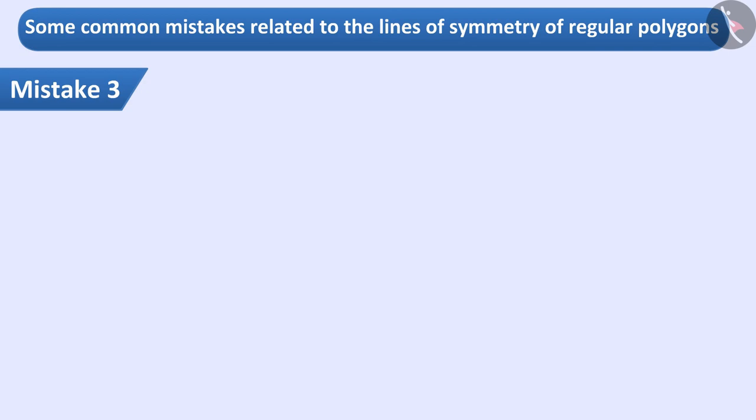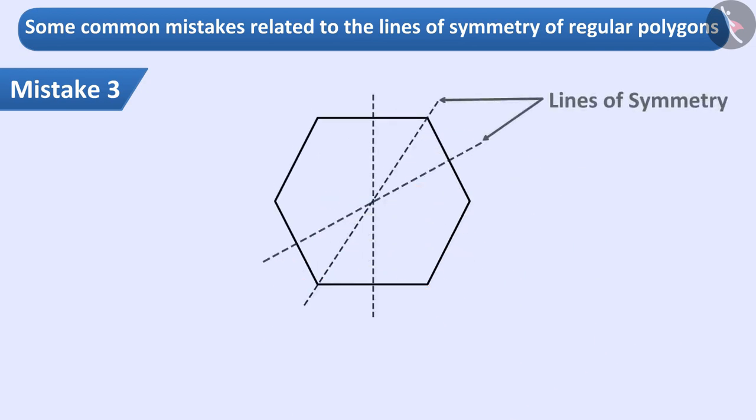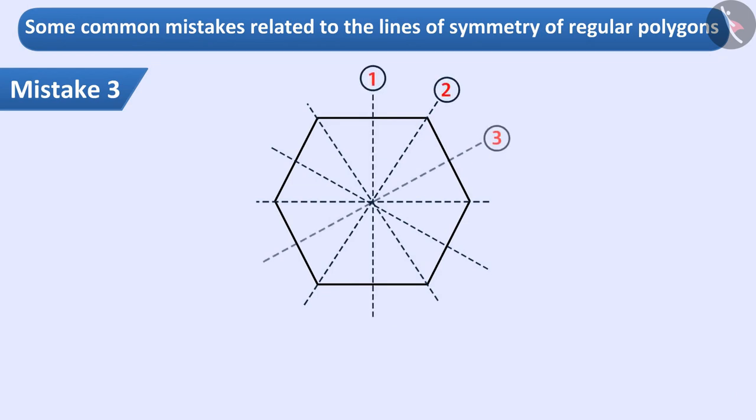Mistake 3. Some children draw lines of symmetry correctly in a shape, but when they count them, they count each line twice by mistake. For example, here they get 12 lines of symmetry, where actually there are 6.